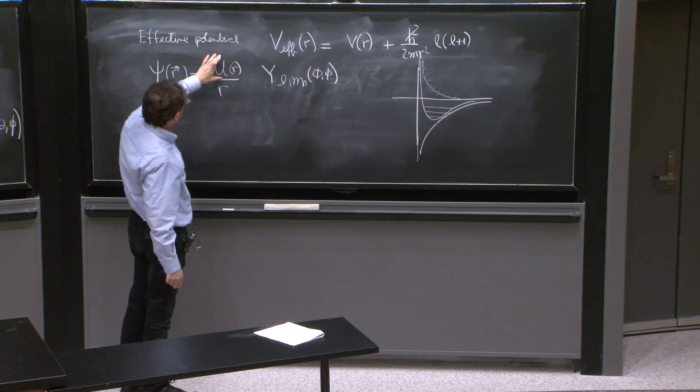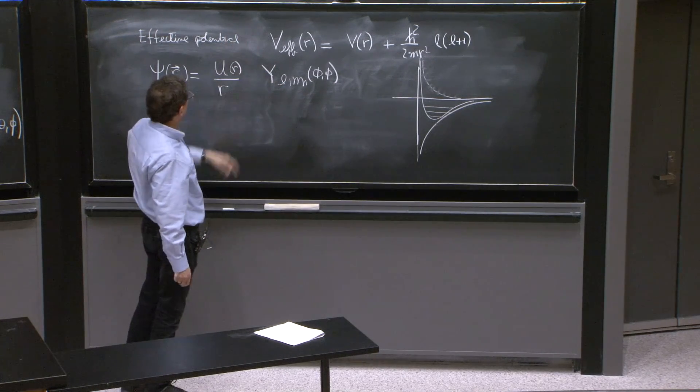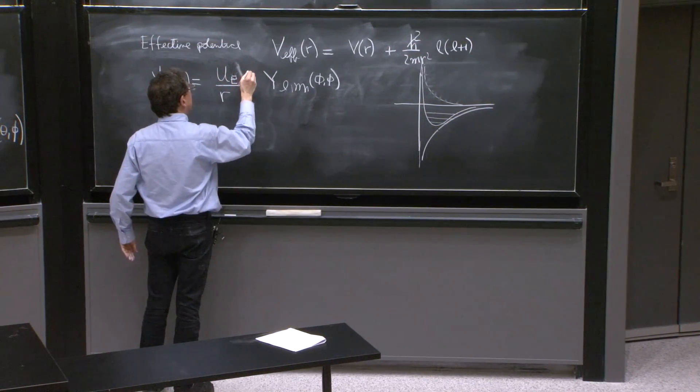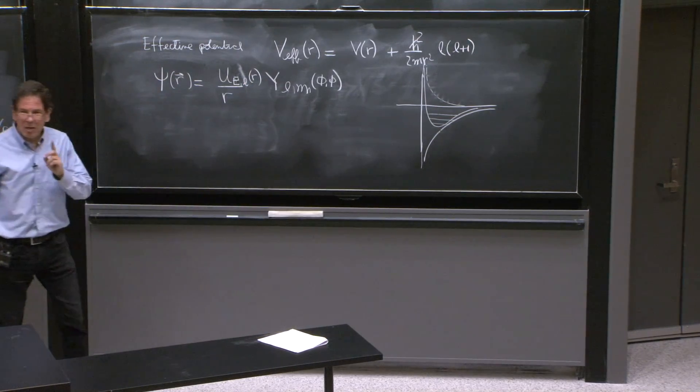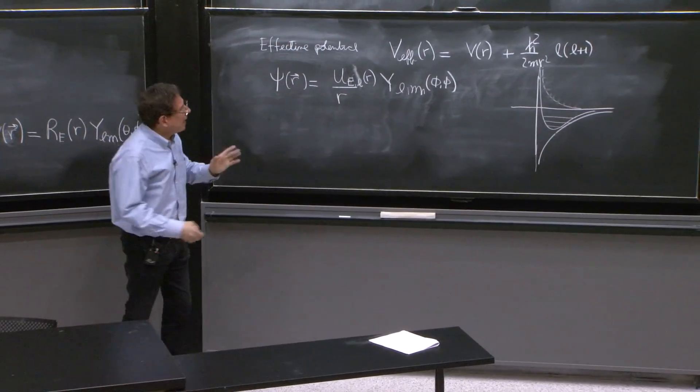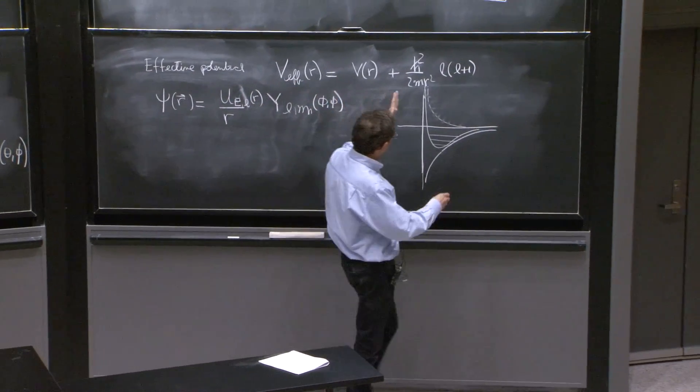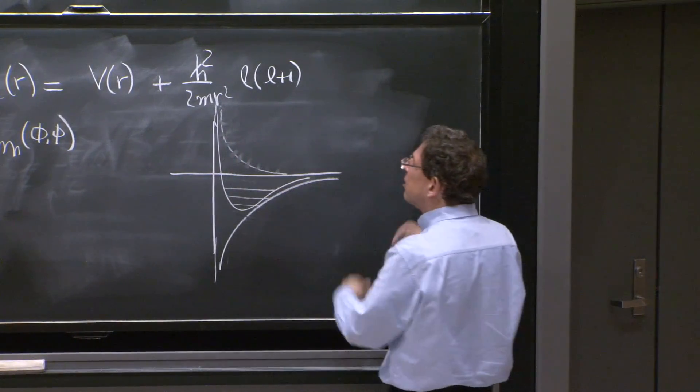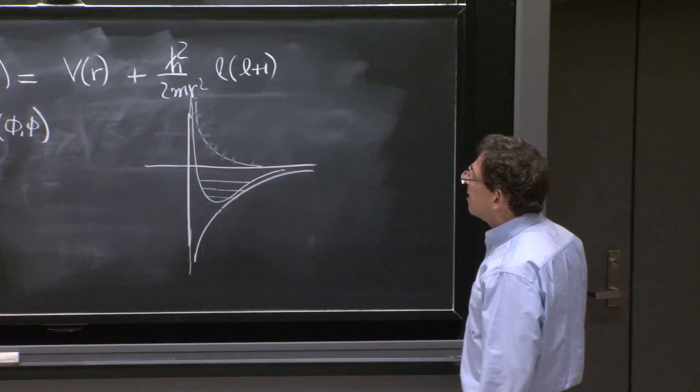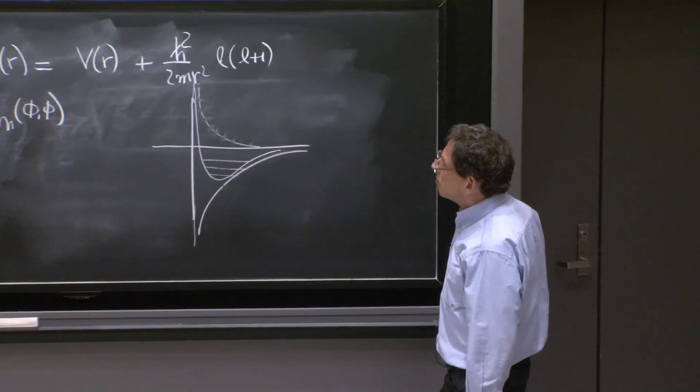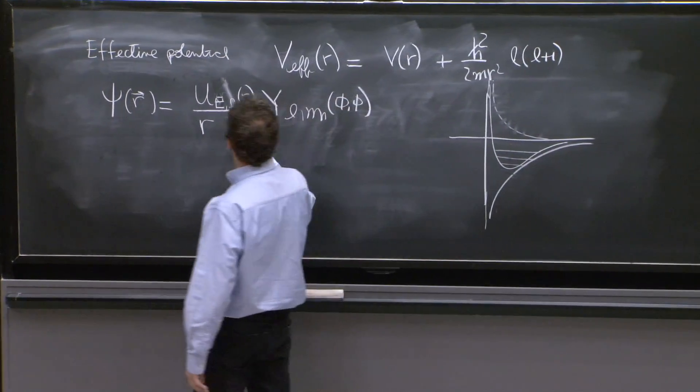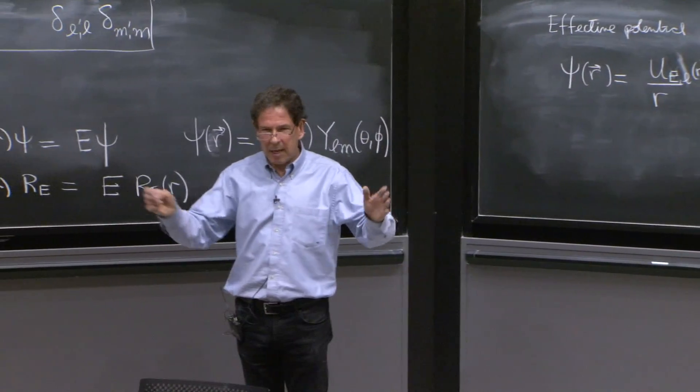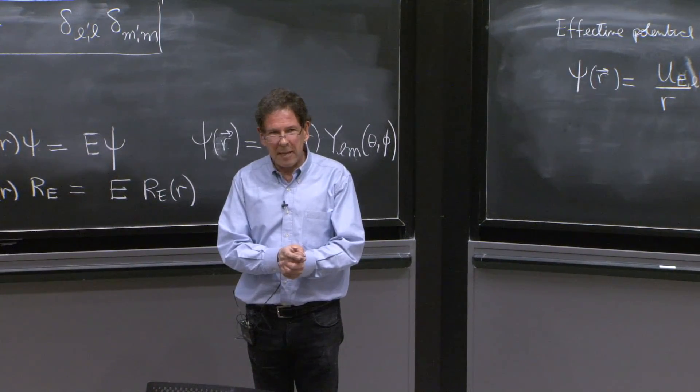On the other hand, the u depends on l because it shows in the differential equation. So I could write here u of E and l because it depends on l and it is the solutions of the Schrödinger equation in one potential. So there will be quantization of energy or there might be stationary states that depend on the energy. So this is the function that knows about l, knows about the energy. And we've been totally successful with the angular dependence.